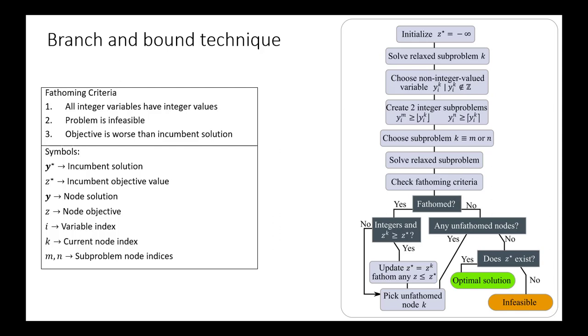Then we fathom any Z nodes that are less than or equal to our new incumbent solution. As we're going through this process, if we identify a new incumbent solution, we look back at any unresolved nodes. Whether or not they're integer solutions, we look back at any unresolved nodes. Any of those that do not have a chance of being better than our current incumbent solution get cut out of the tree and don't need to be considered any further. Once we've picked an unfathomed node, we just go back up to the third step where we choose a new non-integer value variable in our solution and keep going through this process. This is the overall procedure for branch and bound.